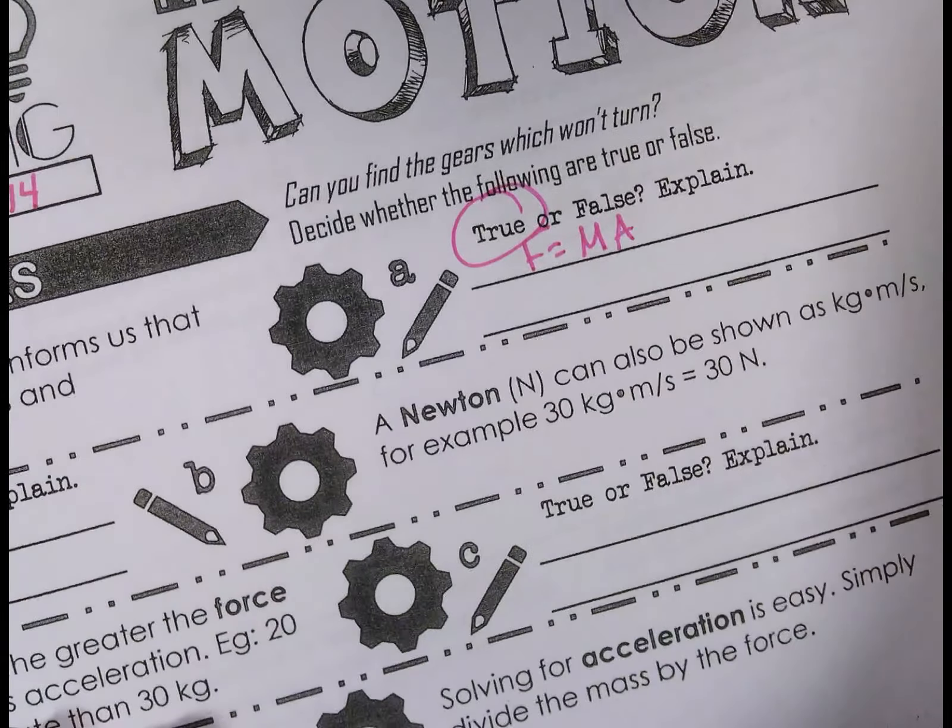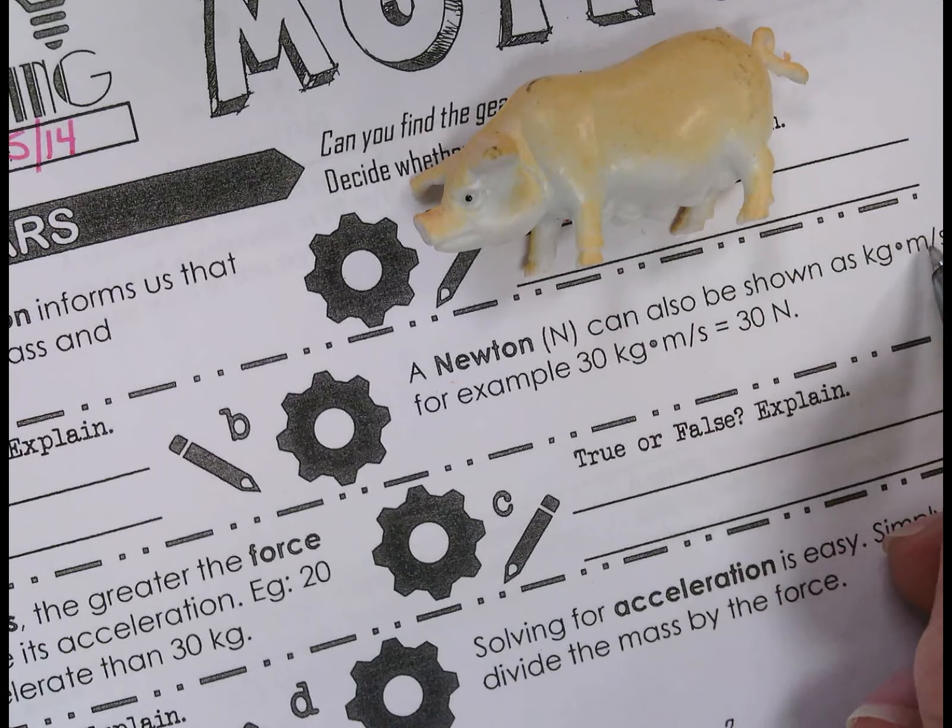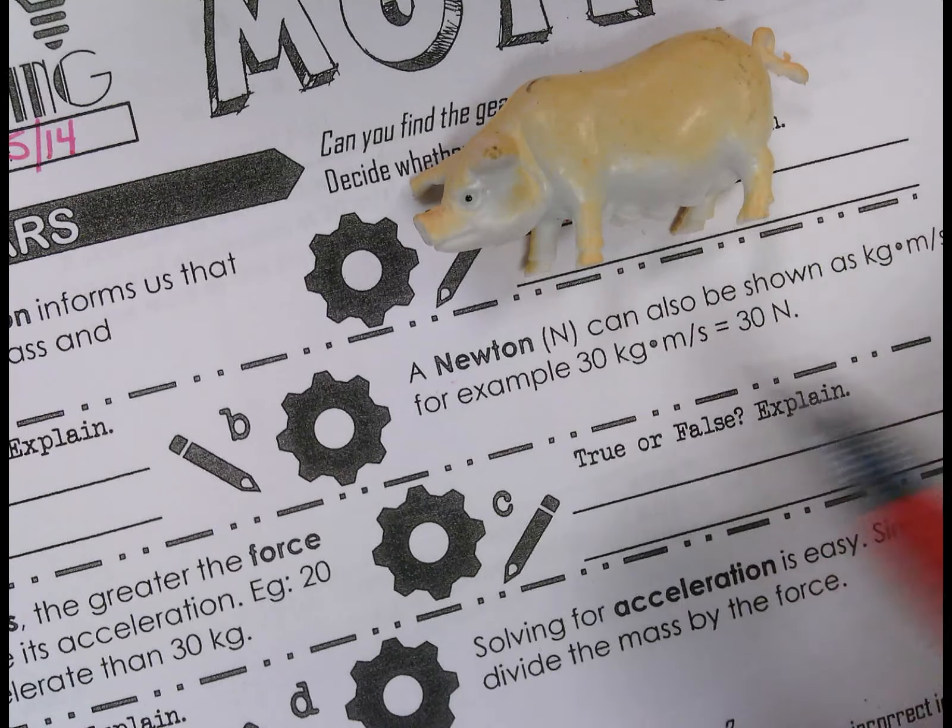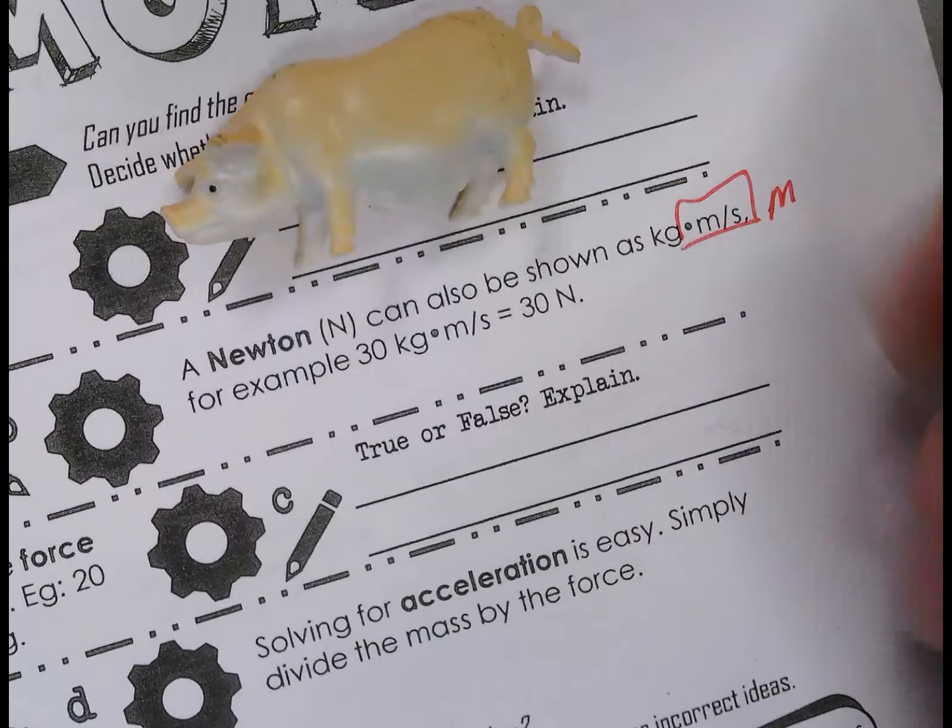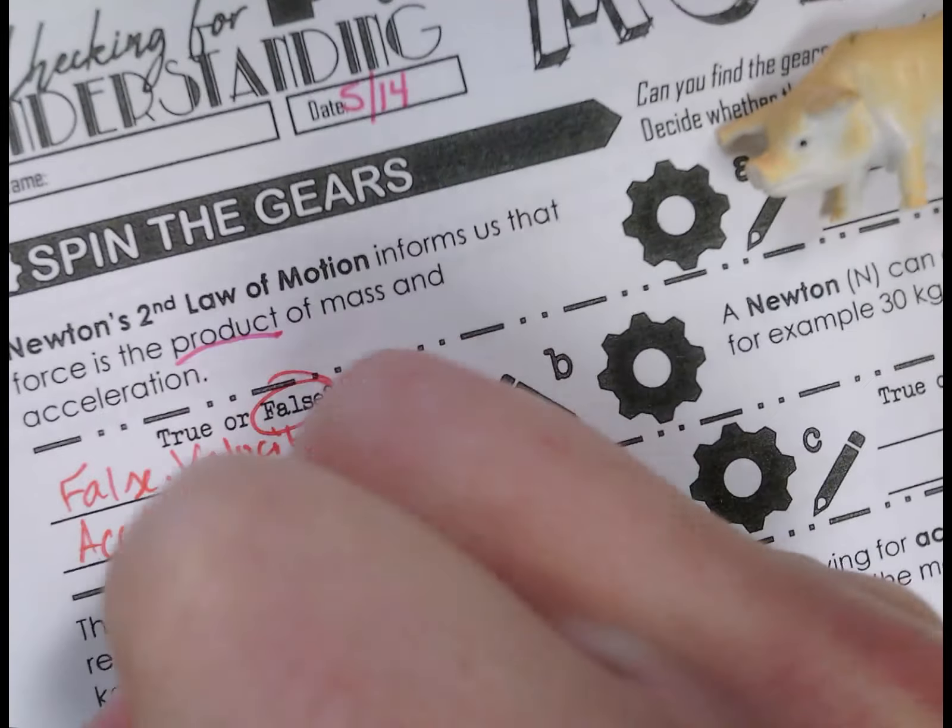So looking at the next one, a Newton can also be shown as kilograms times meters per second. For example, 30 kilograms times meters per second equals 30 newtons. The big thing here is that acceleration is meters per second squared. So the issue with this one is false. The velocity is measured in meters per second. Acceleration, which is what we are using for force, is meters per second squared. So you cannot use it if you're using velocity because the formula does not involve velocity.